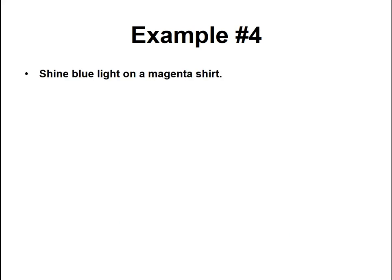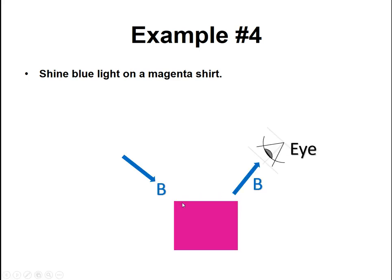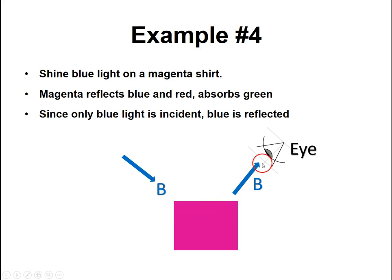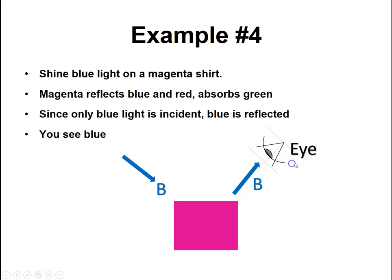Next: blue light on a magenta shirt. Magenta wants to reflect blue and red and absorb green. You're only sending blue onto it, so the only thing that gets reflected is blue. Therefore your eye would see this as blue.